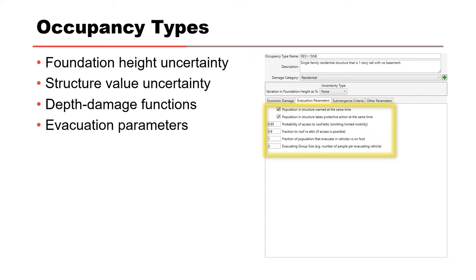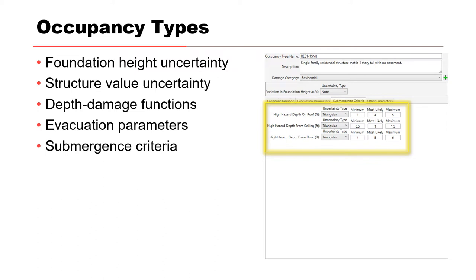Looking at evacuating group size: if the occupancy type is educational, you could potentially have evacuation groups of around 30 people — buses. Prisons, also buses. Single-family residentials, you have cars, maybe one or two per family. So how people evacuate and the size of the groups can be dictated by the occupancy type. Submergence criteria — the depth of water at which I become in a high-hazard situation can also be dictated by the type of structure I'm in.